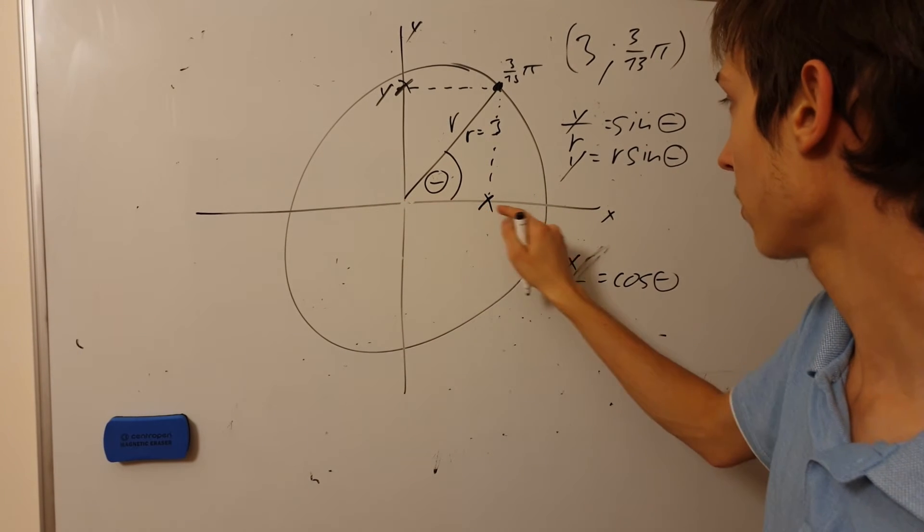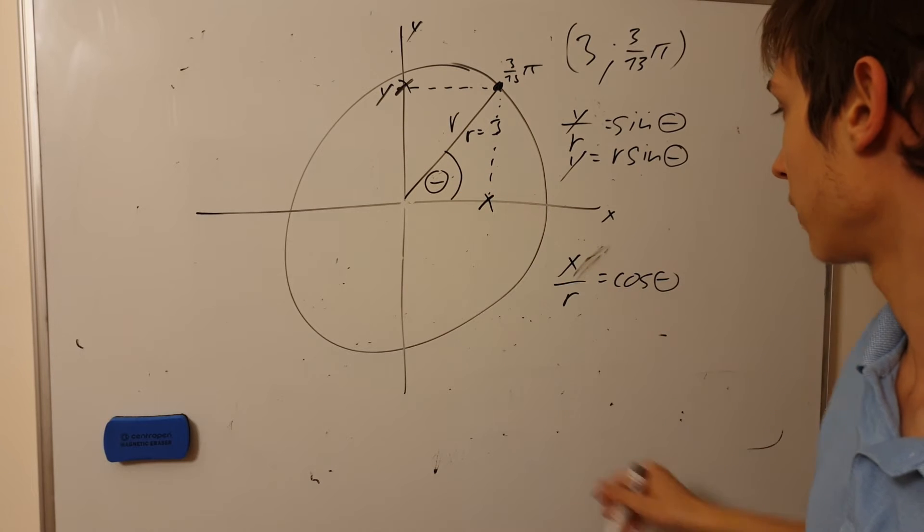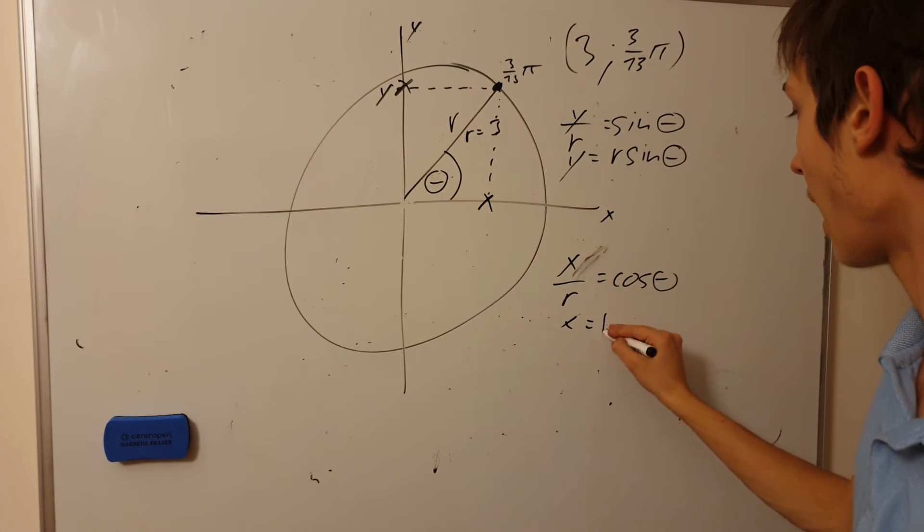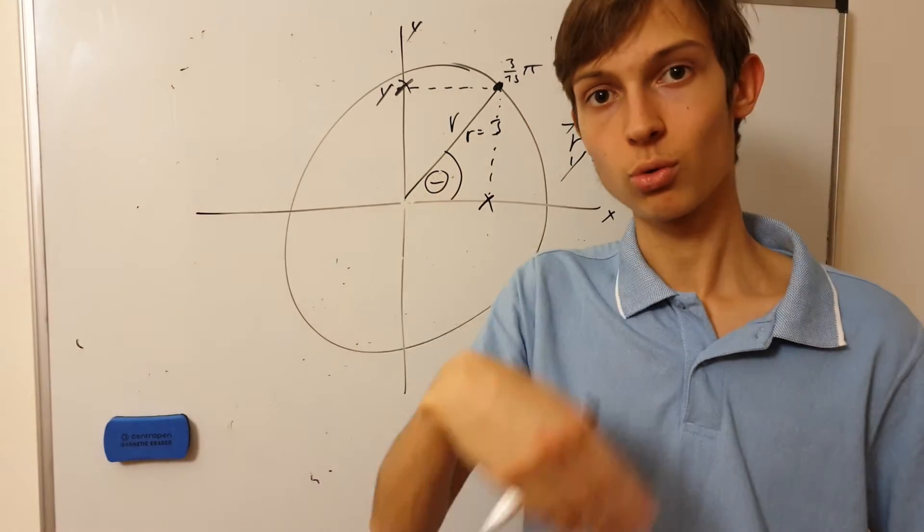It's this, you know, this x-axis, this over the r. So it's cosine of this angle. So x equals r times cosine of the angle. And so now we have the exact way to convert.